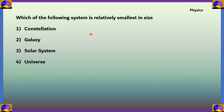This is the first question on physics. Which of the following system is relatively smallest in size? Option 1: constellation. Option 2: galaxy. Option 3: solar system. Option 4: universe.